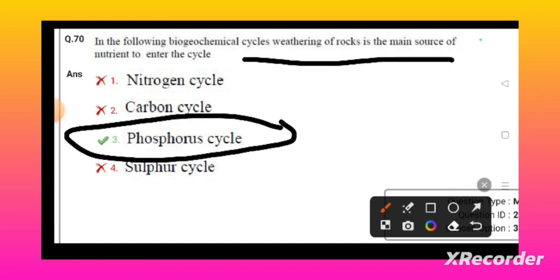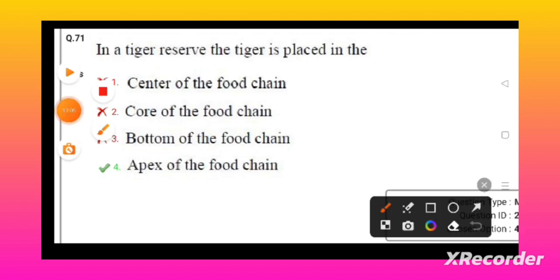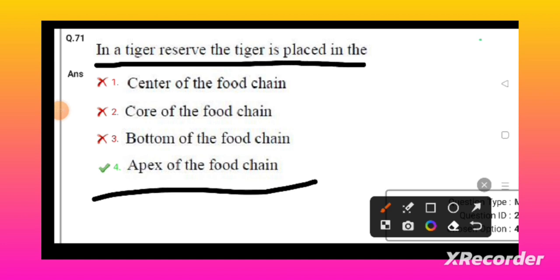In a tiger reserve, the tiger is placed in the apex of the food chain. The formation of the sentence in this question is different - it should not be tiger reserve. In the food chain, the tiger is placed in the apex of the food chain is the correct answer.